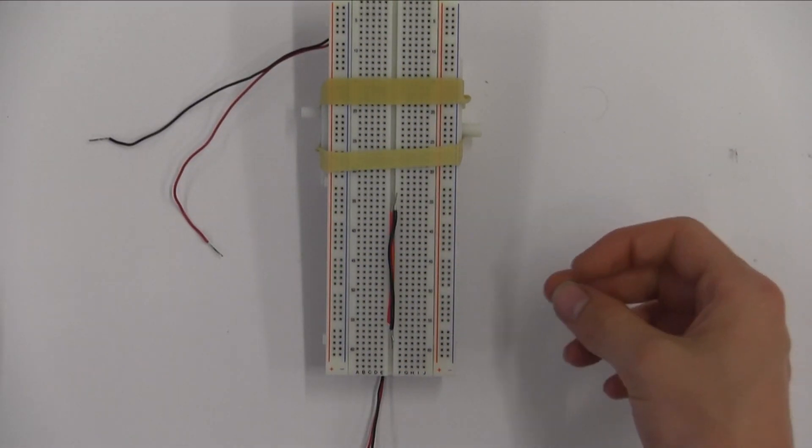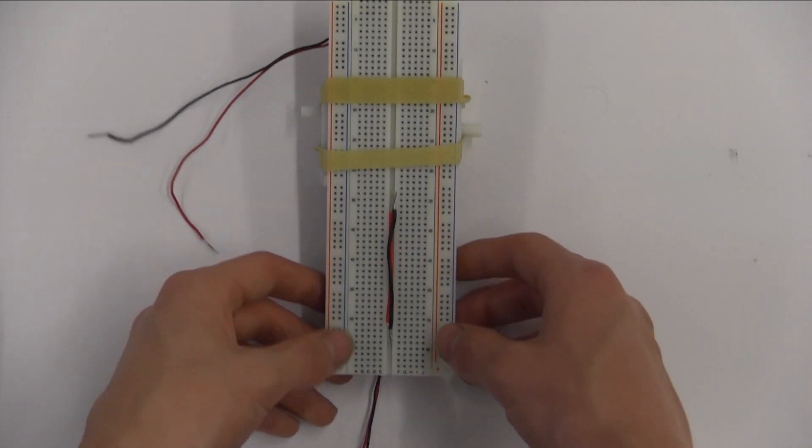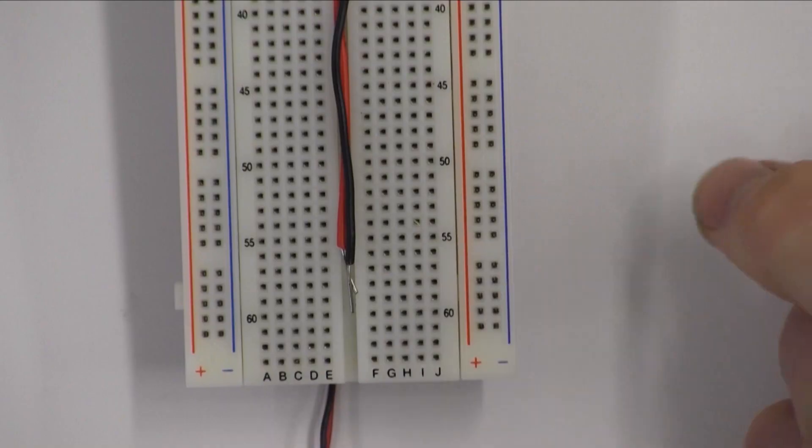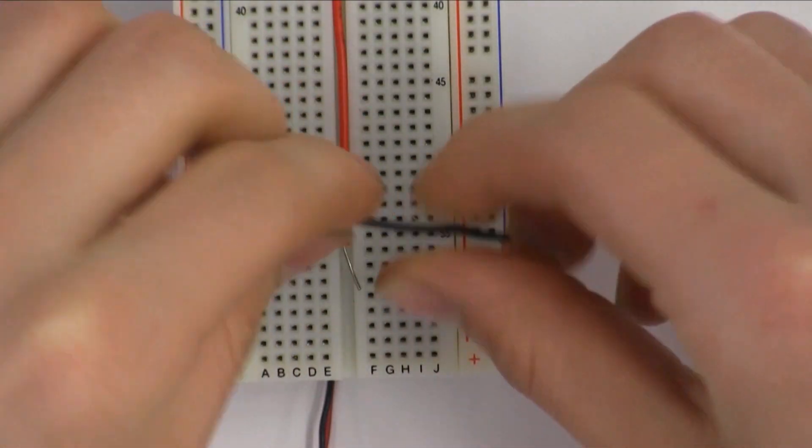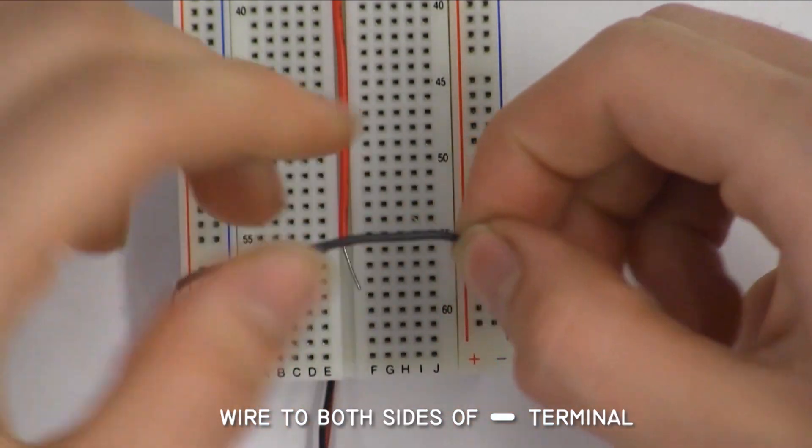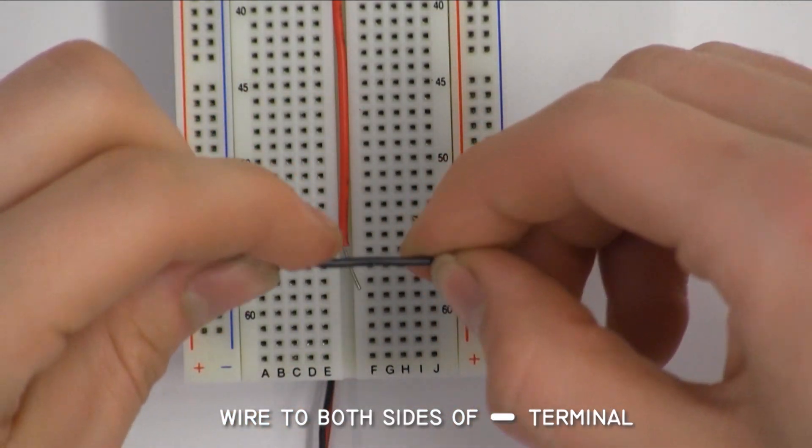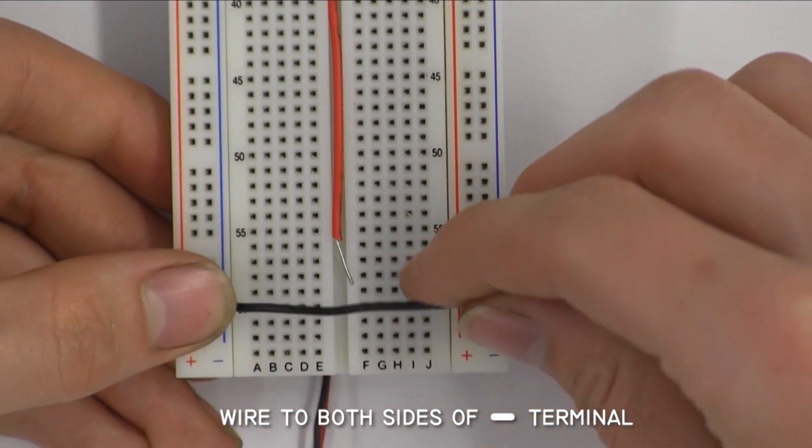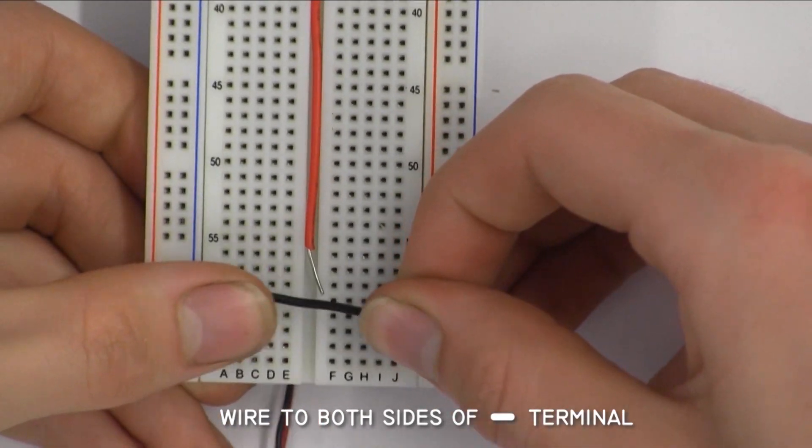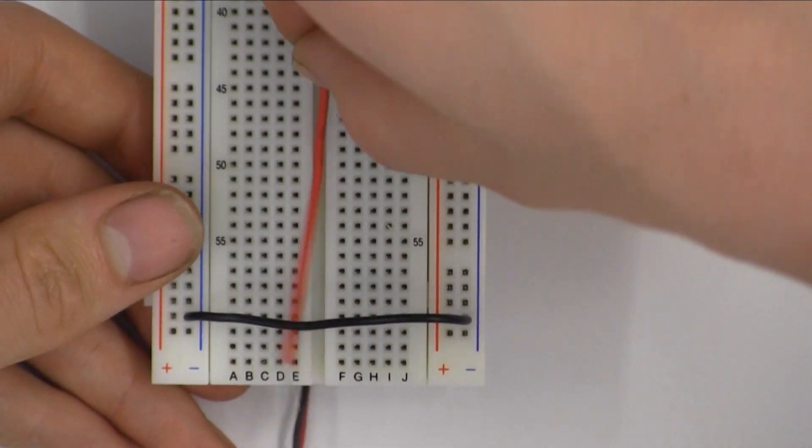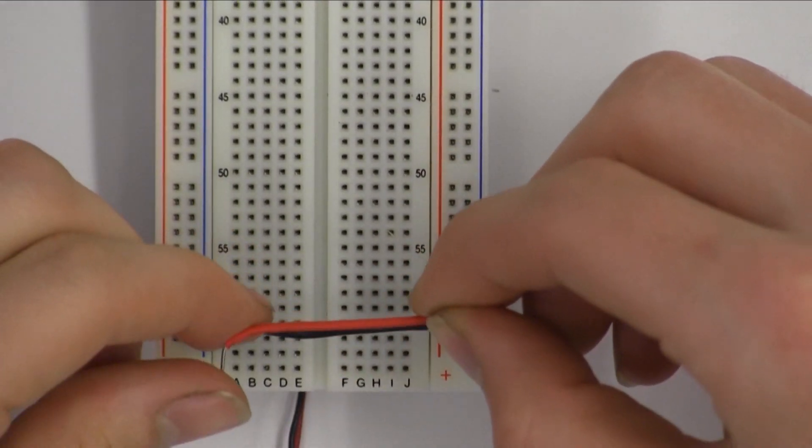Now with what's left of your red and black wire, cut one of each color about 5 centimeters long and strip the insulation off each end. At the very back of the breadboard, plug the black wire into the negative terminal on each side. Then plug the red wire into the positive terminal on each side.